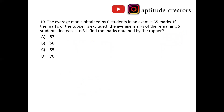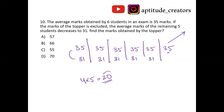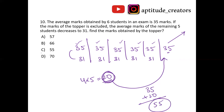The average marks of 6 students is 35. If the topper is excluded, the average of the remaining 5 students decreases to 31 — a decrease of 4. The 5 remaining students each contribute 4 marks: 4 × 5 equals 20. Topper's marks are 35 plus 20 equals 55. Answer is option C, 55.